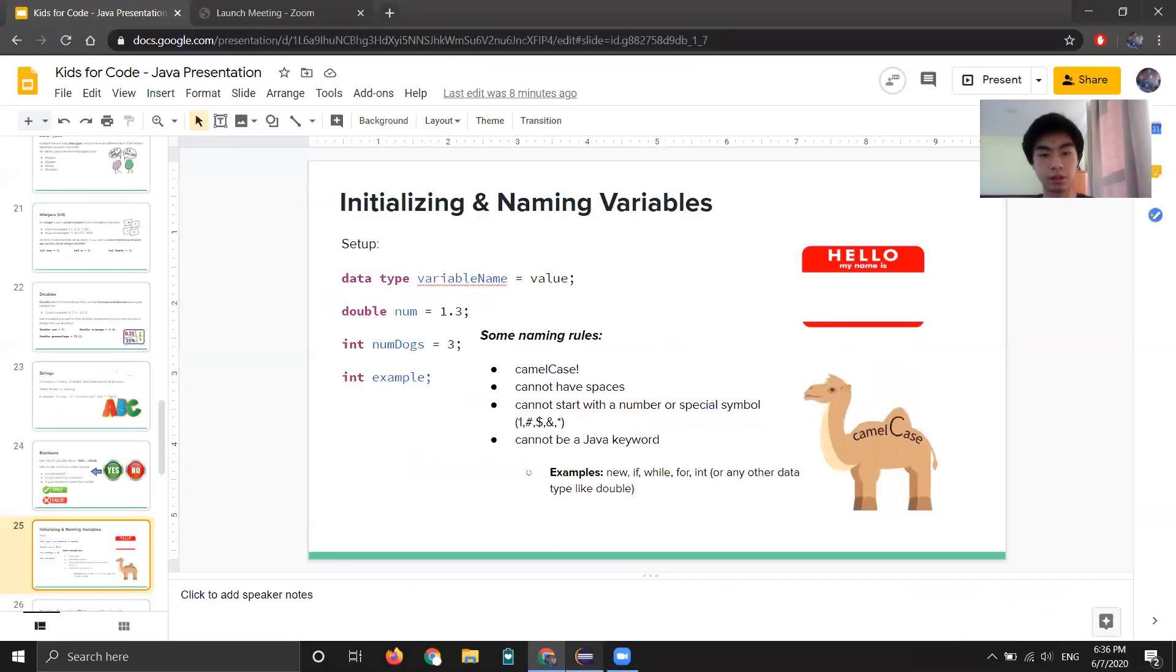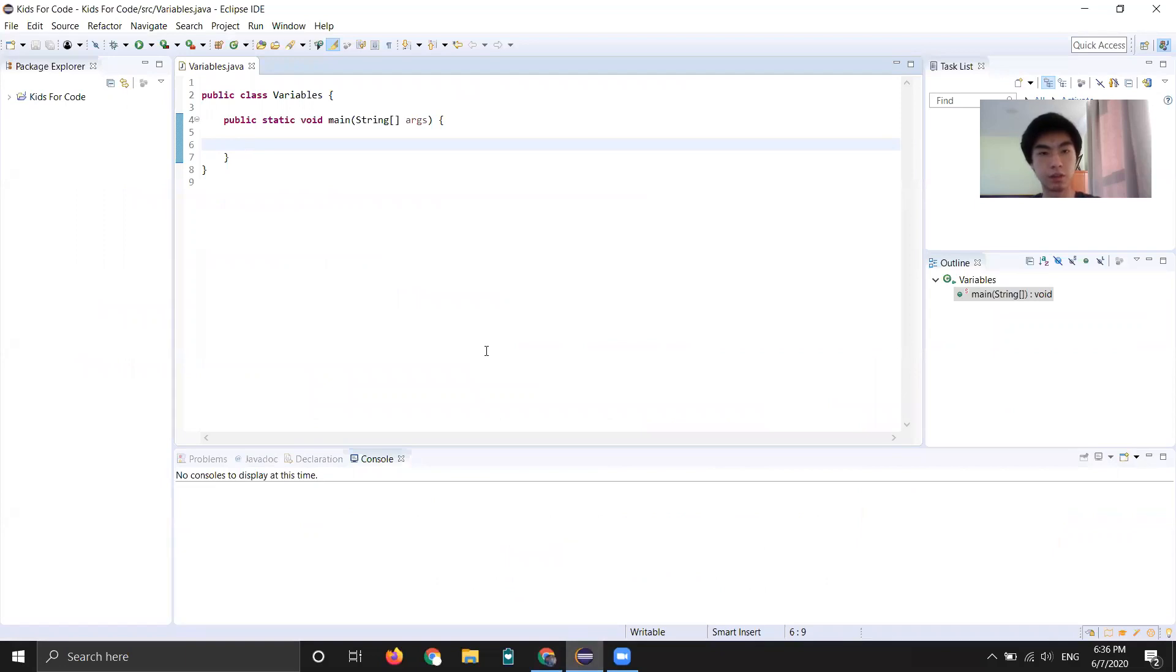Okay, so now we're going to hop into Eclipse. So if I wanted to create a variable for age, I would do int age equals 42. So here we got the data type, and then the name, and then the value.